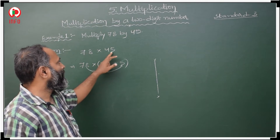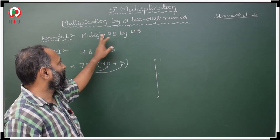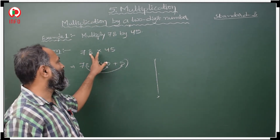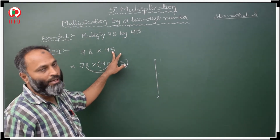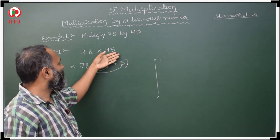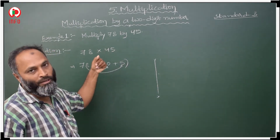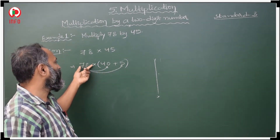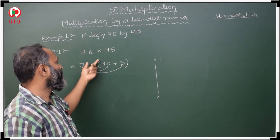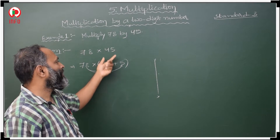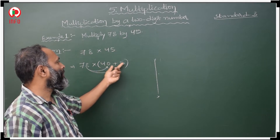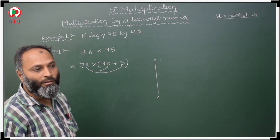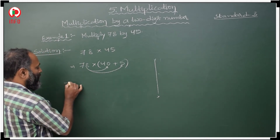Now 78 into 45, multiply 78 by 45. Again we can multiply by using the distributive property also. Then how to apply? See here: 78 same into same. 45 means 40 plus 5, 40 plus 5. Now we have to apply distributive property.